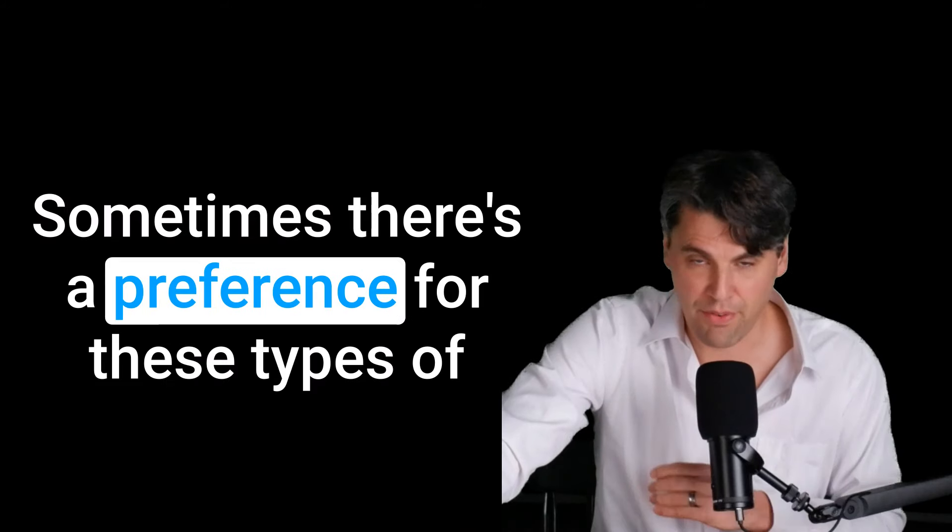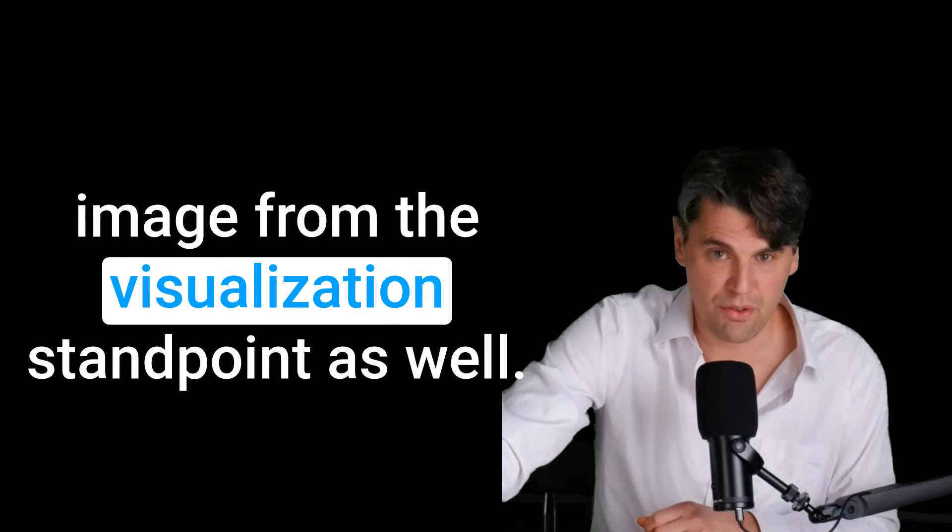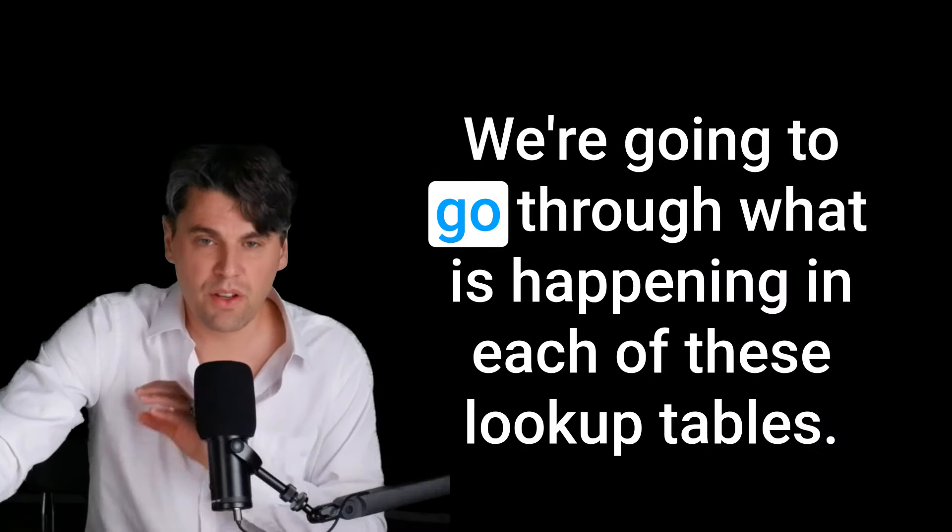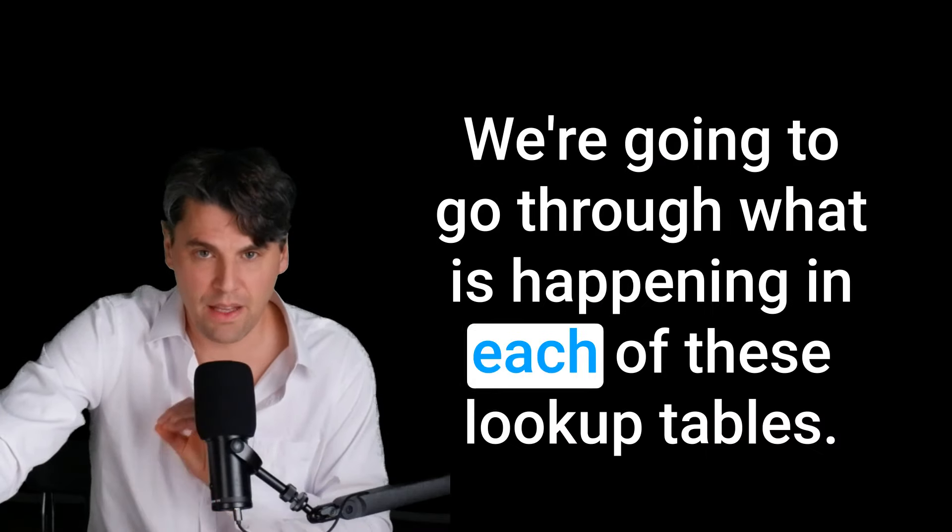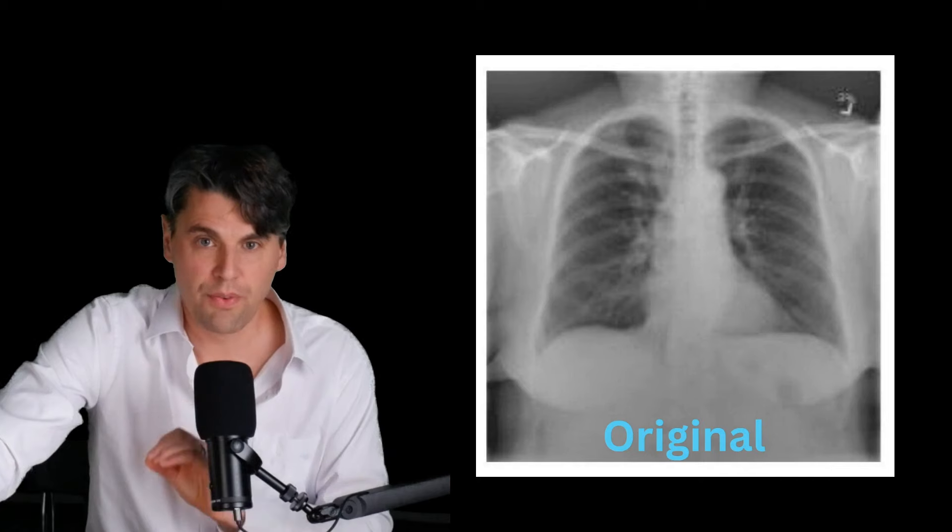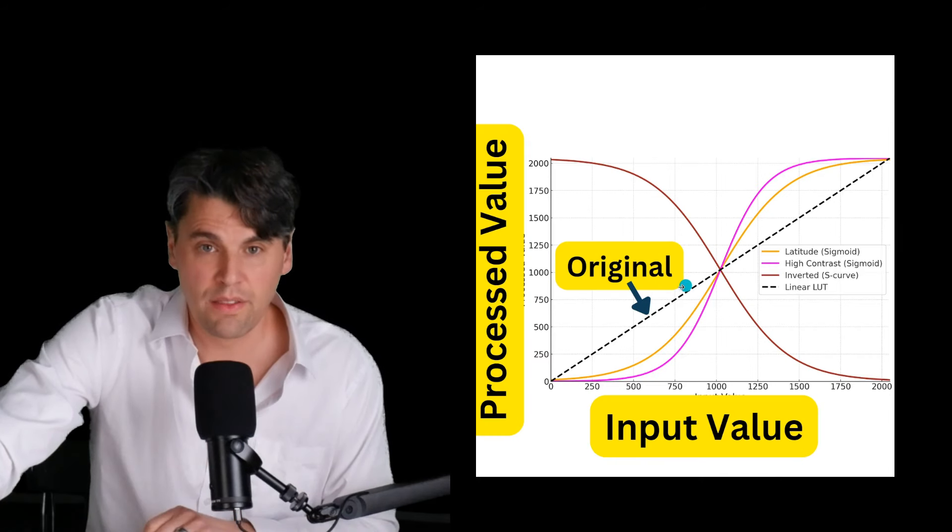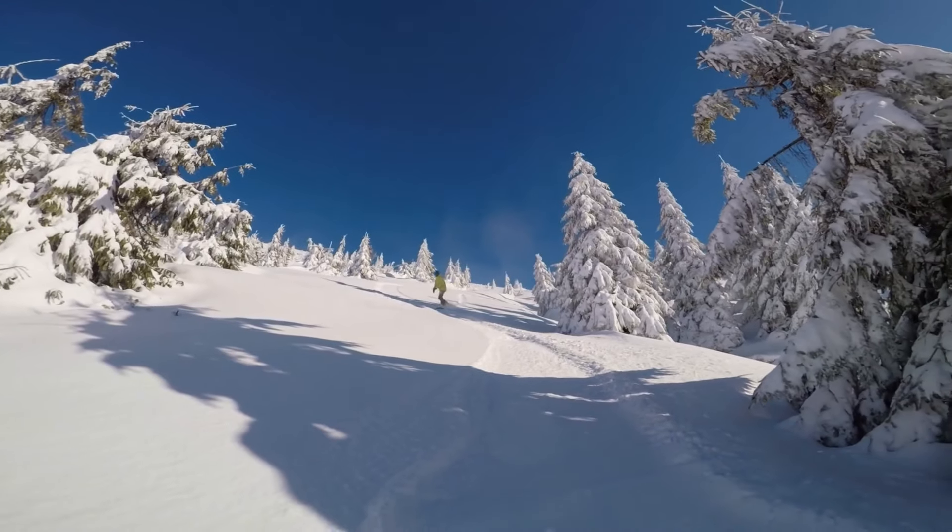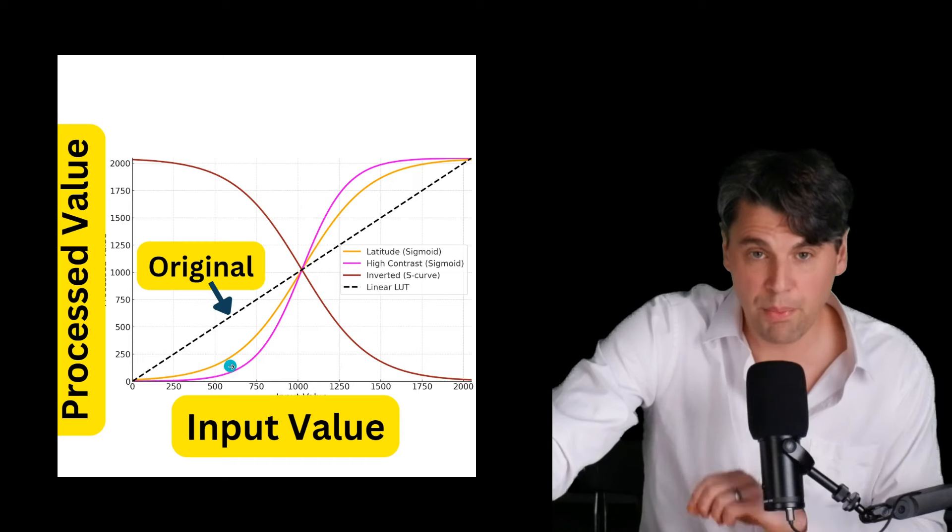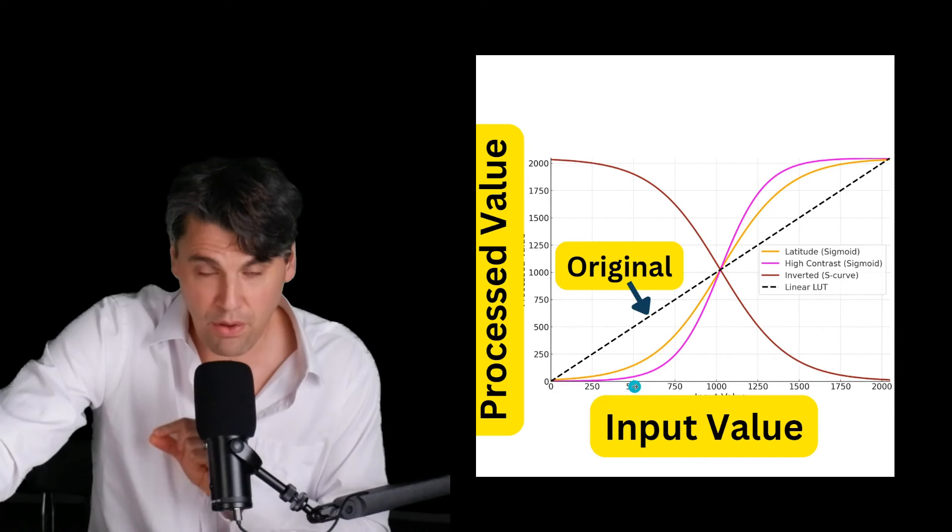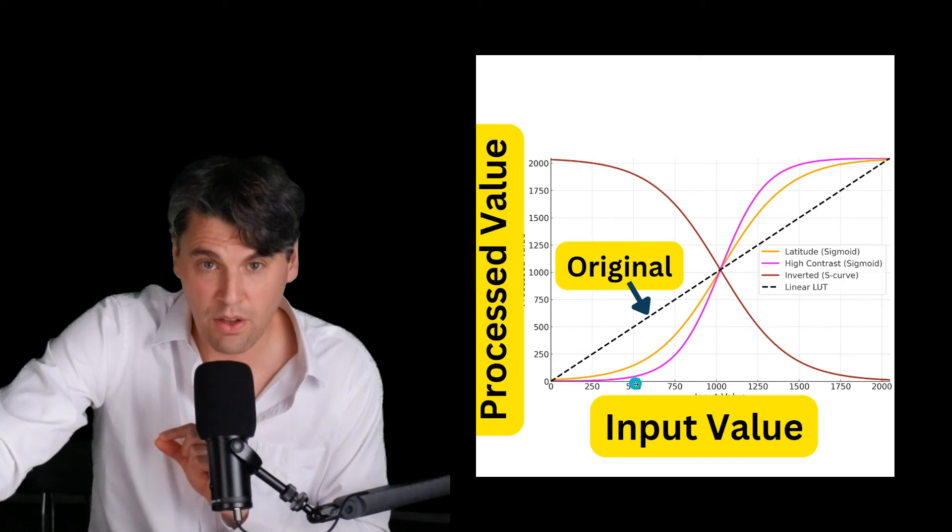Sometimes there's a preference for these types of image from the visualization standpoint as well. We're going to go through what is happening in each of these lookup tables. So if you have an original image here, for the original image, you can say there was actually a lookup table that has a slope of one. So for each pixel, we're going to go through and depending on its value, if the pixel had a value of 500, you start at your x-axis and you draw up to that line and then you go over to your y-axis.